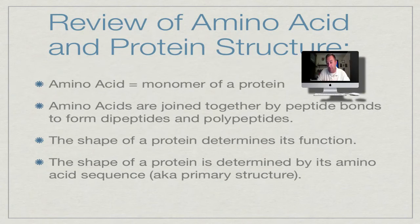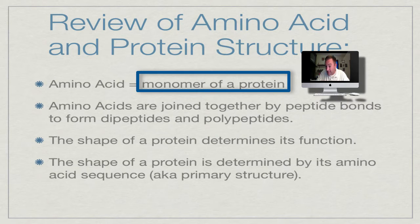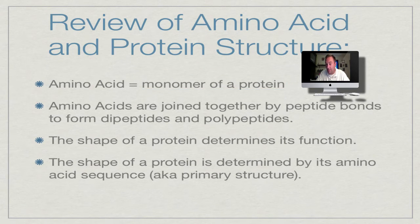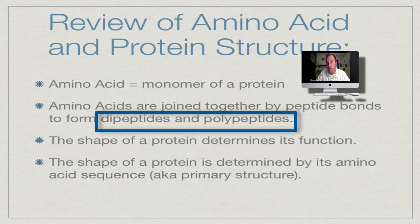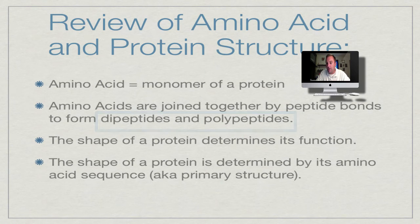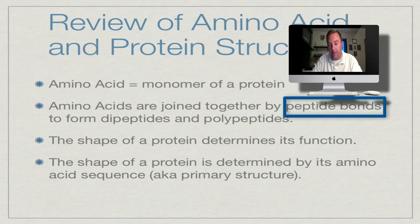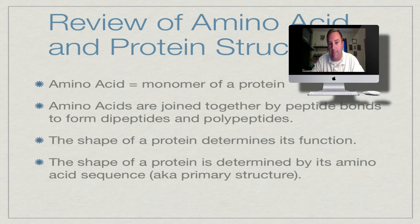Let's begin by reviewing what an amino acid and a protein are. An amino acid is the monomer of a protein. Amino acids can be joined together to form dipeptides, which have two amino acids joined together, or a polypeptide, which is three or more amino acids joined together. Each amino acid is joined by a peptide bond, so there's always one less peptide bond compared to the number of amino acids.